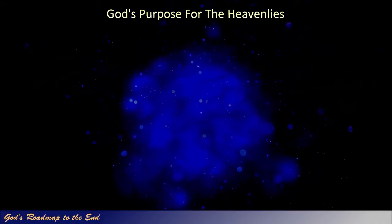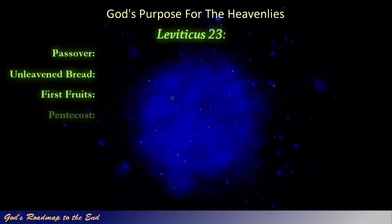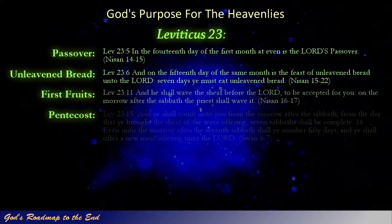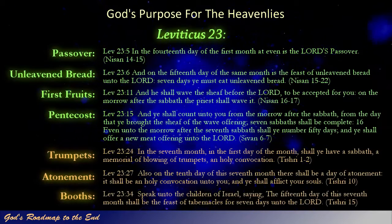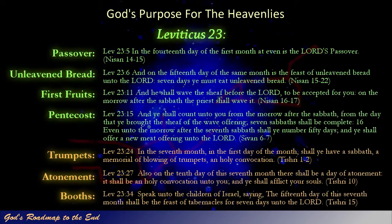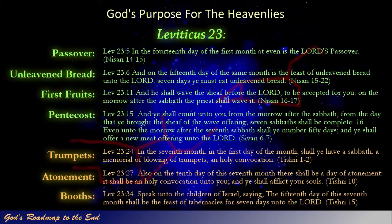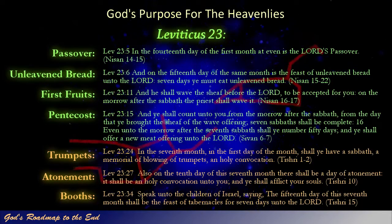God's appointments are then described in Leviticus 23, where God details to his Israel the days on which these appointments can occur in any given year, based on the lunar calendar that Israel uses. For those who study eschatology, the feasts of the Lord is a well-known and understood subject, with lots of information and commentaries available in bookstores and online. The feasts of the Lord and the days on which they occur are also very important when it comes to understanding the celestial markers that God has given us.